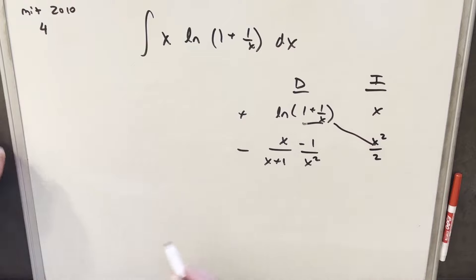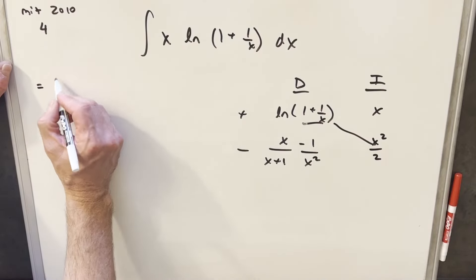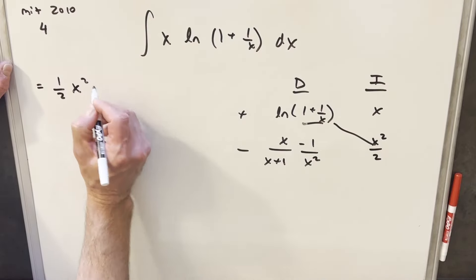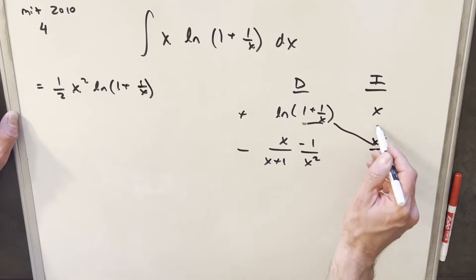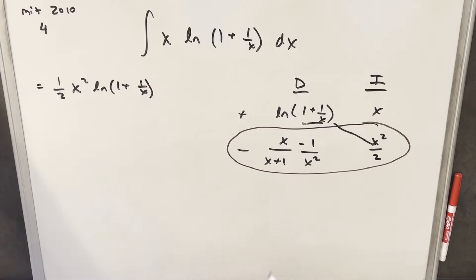So we're going to have part of our answer right here on the diagonal. Okay, so we'll just write that down. We'll write this as a half x squared, natural log, 1 plus 1 over x. And then this piece is going to be an integral, but we're just going to clean it up a little bit.